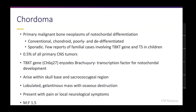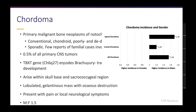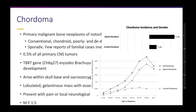Chordomas are malignant neoplasms of notochordial differentiation with four subtypes: conventional, chondroid, and poorly differentiated. In certain familial and sporadic cases, they involve a T-box gene encoding the transcription factor brachyury, which is essential for notochordial development. Because they derive from the notochord, their presentation is midline, involving the clivus and the sacrum. They have a higher incidence in males compared to females, and increasing incidence with age.